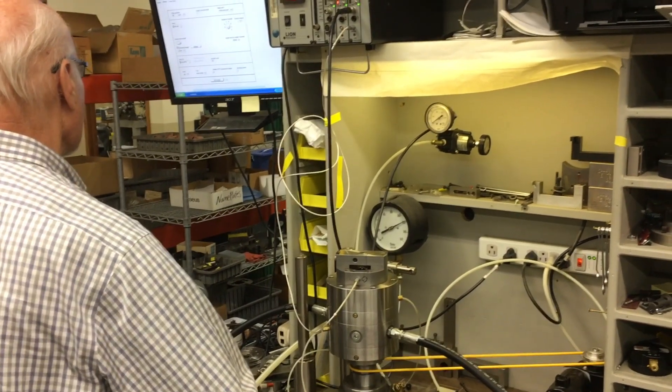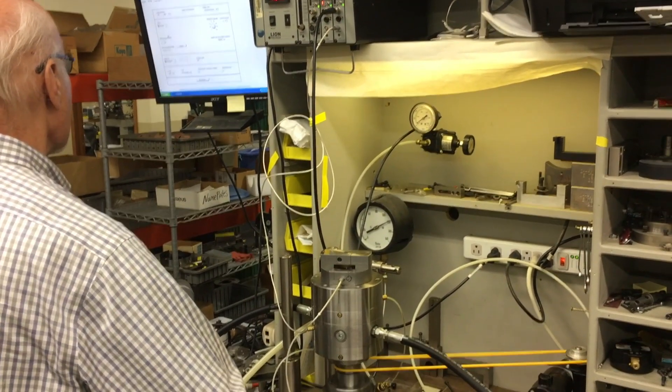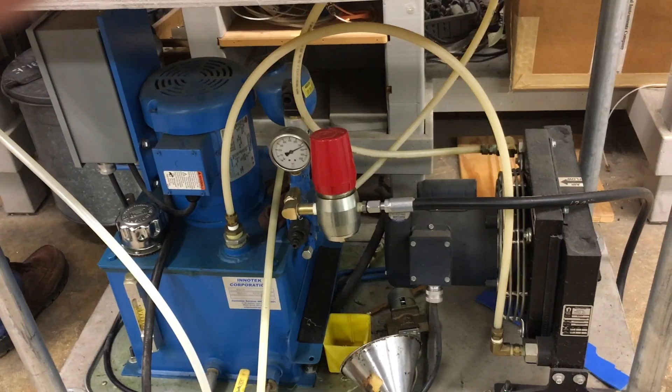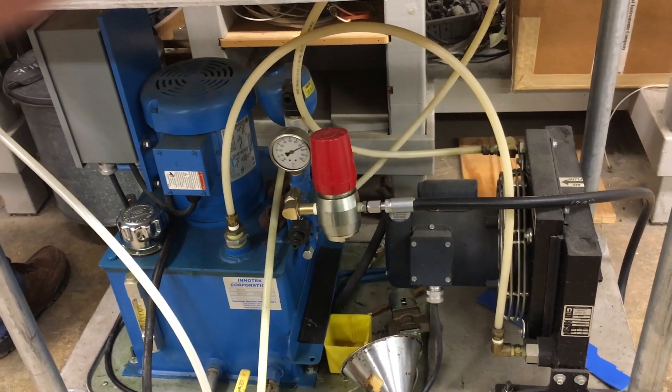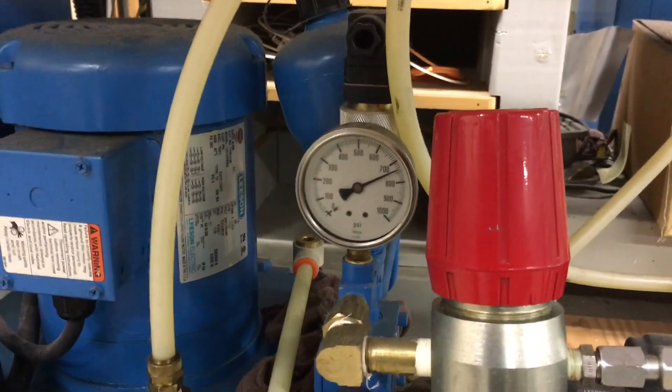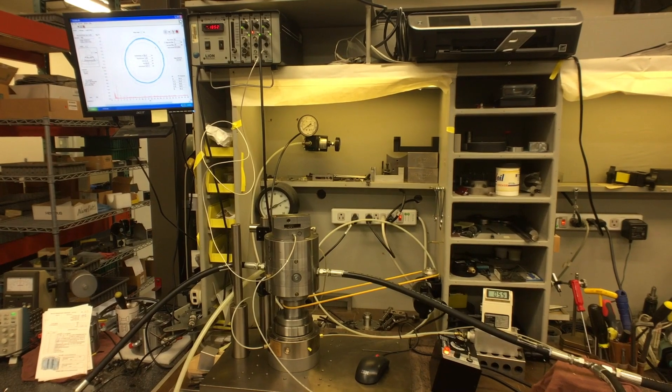In this video we're checking error motions on our 4-H spindle. Here you're seeing the oil supply that we use, running at around 750 psi right now.